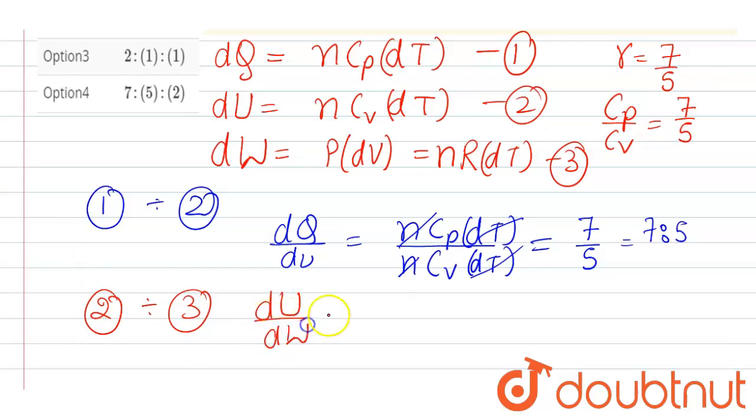Will be equal to nC_v dT divided by nRdT. Now C_v will be 5R by 2. C_v will be 5R by 2 upon R, so it will be 5 is to 2.